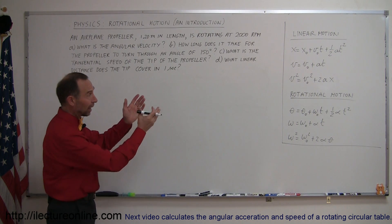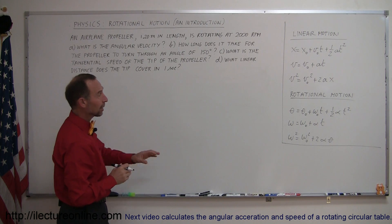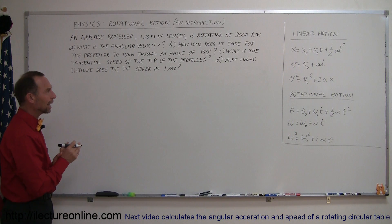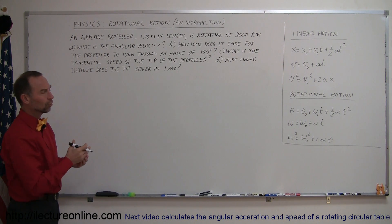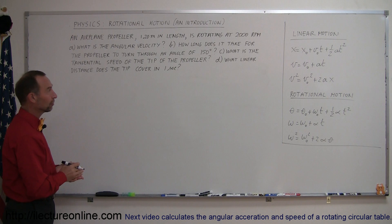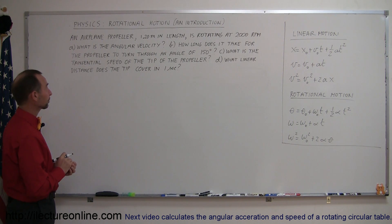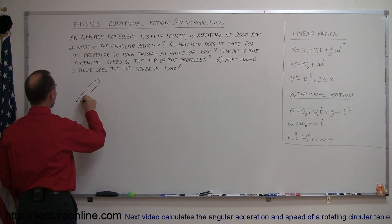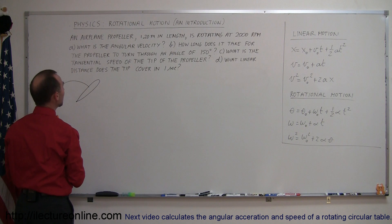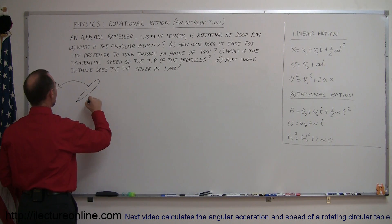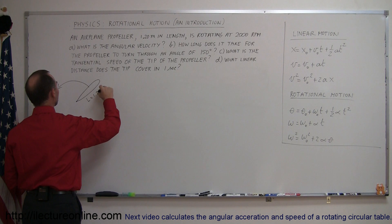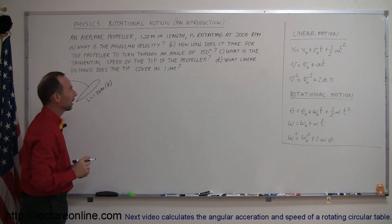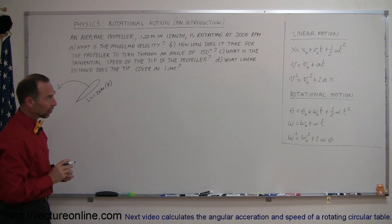To help us along, I wrote down the linear equations of kinematics and the equivalent rotational equations of kinematics, and we'll probably need a few more equations to relate the angular distance to linear distance along the edge of the circular motion. Imagine we have a propeller rotating at a certain rotational speed. The length of the propeller, L, is equal to 1.20 meters, sometimes also thought of as the radius of motion R. It's rotating at 2,000 RPM.